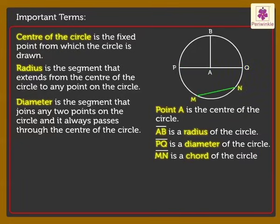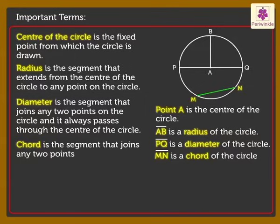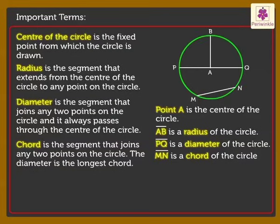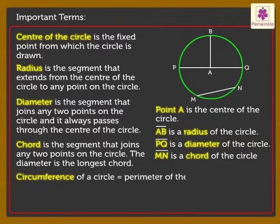Line segment MN is a chord of the circle. Chord is the segment that joins any two points on the circle. The diameter is the longest chord. The circumference of a circle is the perimeter of the circle.